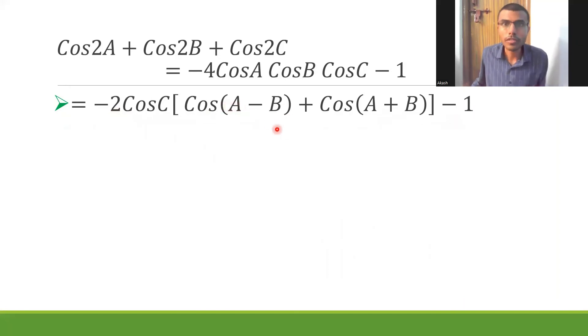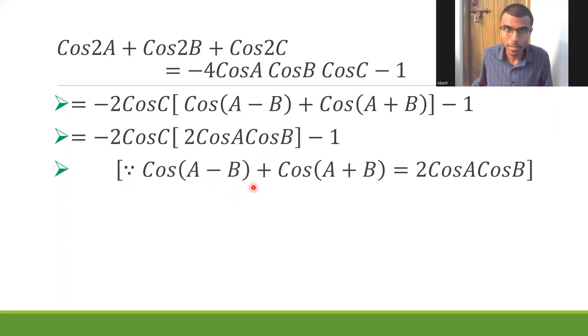Now, cos(A-B) + cos(A+B) is nothing but 2cosAcosB. 2cosAcosB. Again, don't forget to mention it to make sense. This is an important one.